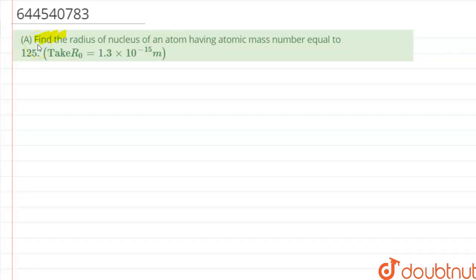Hello everyone, in this question we have been given, find the radius of a nucleus of an atom having atomic mass number equal to 125. So let us start this question.